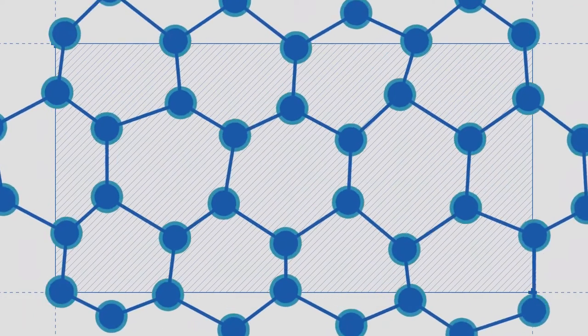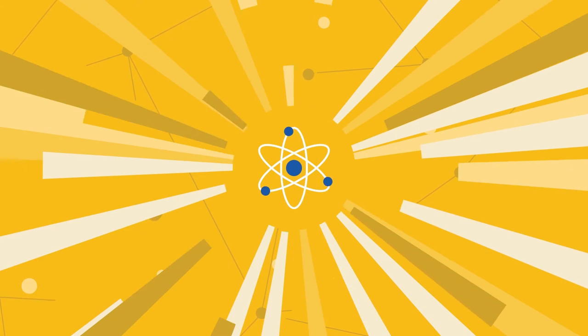Graphene's atoms are arranged in a hexagonal arrangement. Graphene is very thin, it's around one atom thick.